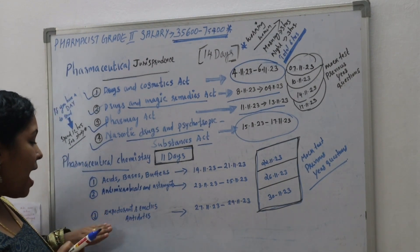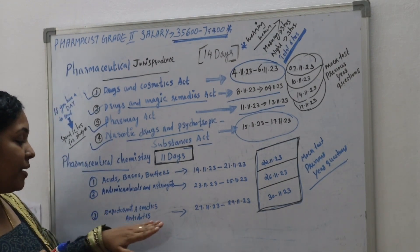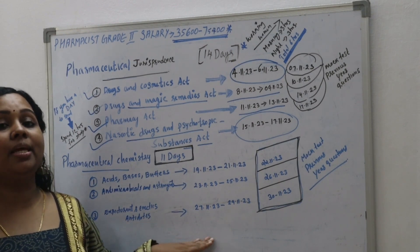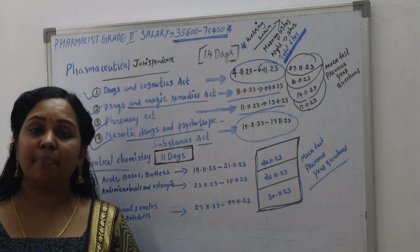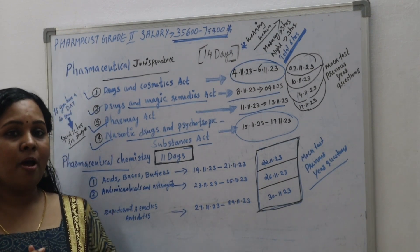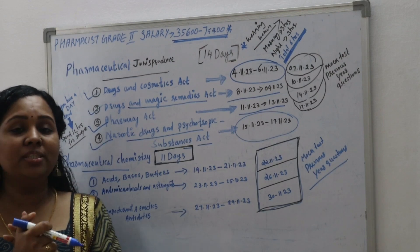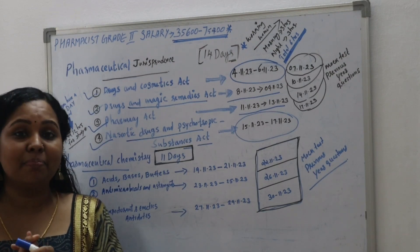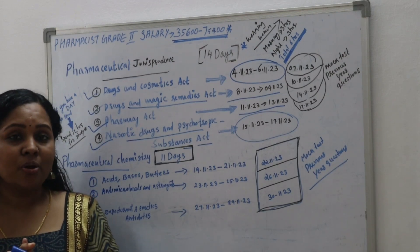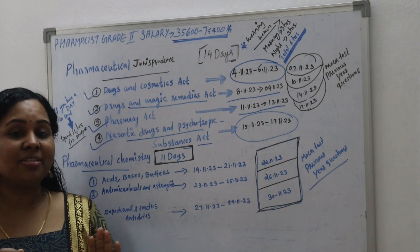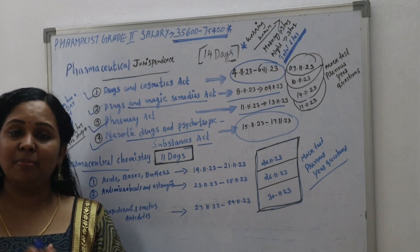You have to complete these three portions. Pharmaceutical Chemistry 1 will be complete in about 12 days.